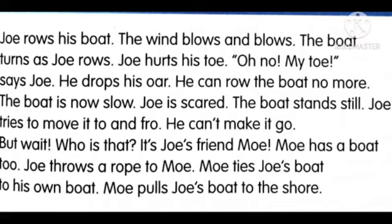He rows — when a singular subject is there, the verb follows with the plural form. So 'Joe rows.' The wind blows and blows. So what is the wind doing? Just by seeing the picture of the trees you can say that the wind is blowing. Wind is a thing, so it is a noun. The wind blows — here 'blows' is followed by the plural verb form. The wind blows and blows.